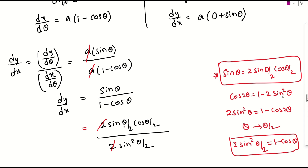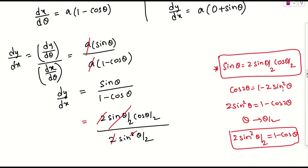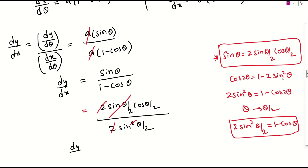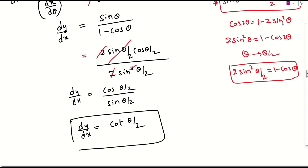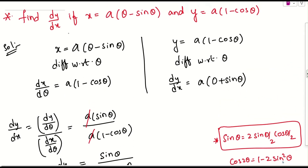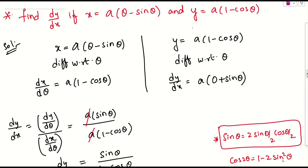The 2 and one factor of sin(θ/2) cancel from both numerator and denominator. We are left with dy/dx = cos(θ/2) / sin(θ/2), which equals cot(θ/2). So the final answer is dy/dx = cot(θ/2).